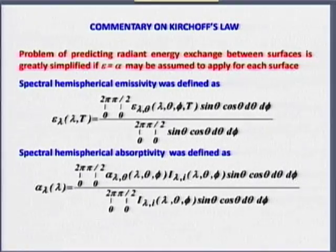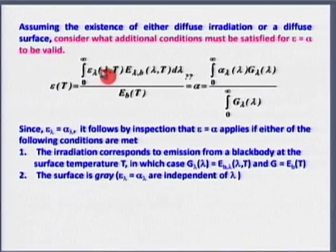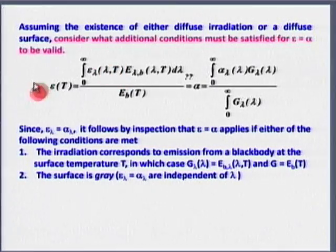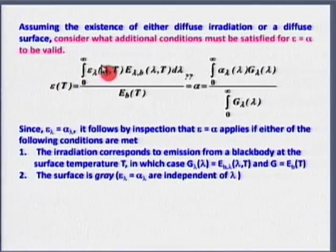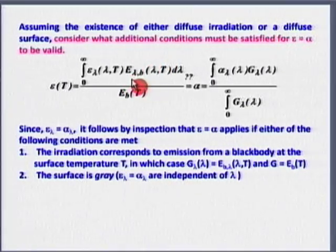So when I say epsilon equals alpha: temperatures are equal, the surface is grey, and it is diffuse — grey because of wavelength independence, diffuse because I have eliminated directional dependency. This is a diffuse-grey surface. The figure now shows how you could go wrong if you blindly assume alpha equals epsilon: total absorptivity depends on the spectral distribution of irradiation, while emissivity depends on what leaves the surface by virtue of its temperature.